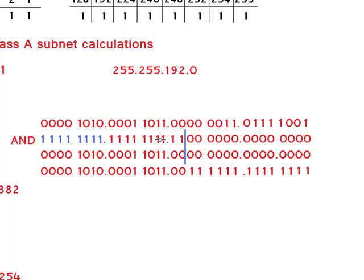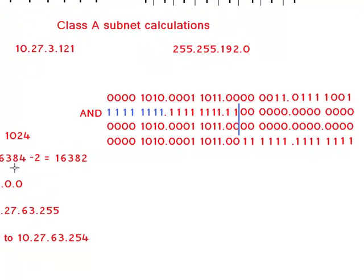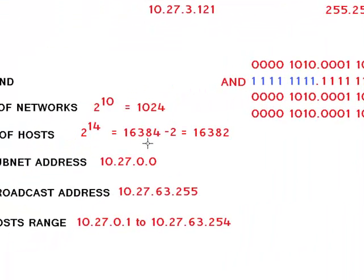To find number of hosts, we count number of zeros in your mask, which is 14. We do 2 to the power of 14, gives us 16,384. We do minus 2 because we cannot use subnet address and broadcast address. So we have 16,382 valid hosts.